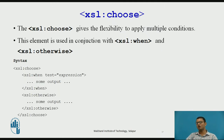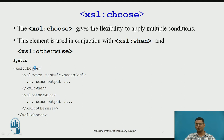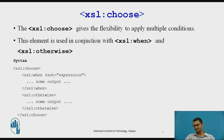Similarly, choose is used for conditions when we want to apply multiple conditions. This element is used in conjunction with xsl:when and xsl:otherwise. You write choose, and when the first condition is true, the corresponding output and styling will be triggered and displayed. Then we close when, and xsl:otherwise handles the case when the condition is false — whatever styling is done there will be displayed. At the end, we close the choose element.